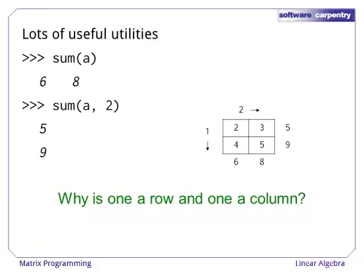In the first example, we are summing over each column of the matrix, which happens to be the default. In the second case, we sum over each row. Dimensions in a matrix are numbered 1 through n, and they are in the same order as the indices you use to access a single element.